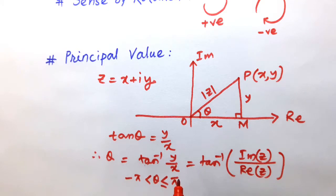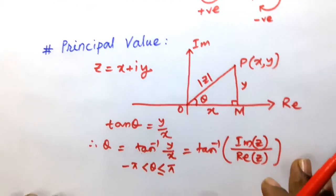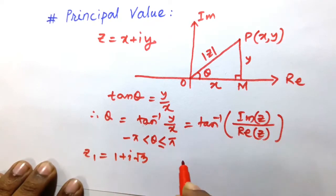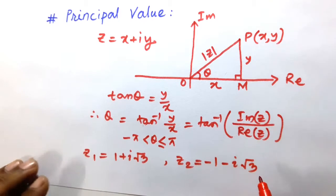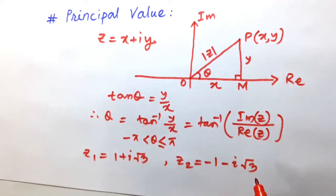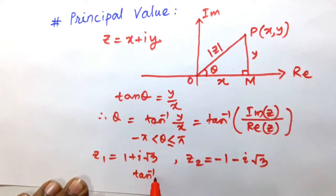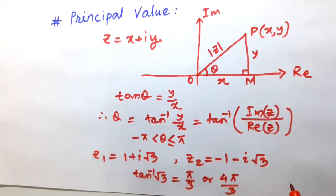This formula for determining the argument of z = x + iy has a severe drawback. Consider two complex numbers: z₁ = 1 + i√3 and z₂ = −1 − i√3. These are distinct complex numbers represented by two distinct points in the argand plane, but their arguments both seem to be tan⁻¹(√3) = π/3 or 4π/3, which is not correct.